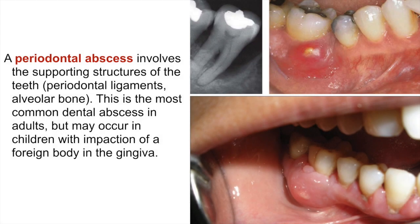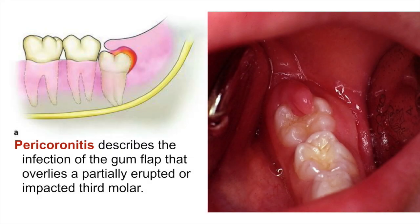A periodontal abscess involves the tissue-supporting structures of the teeth — the periodontal ligaments and alveolar bone. This is the most common dental abscess in adults but may occur in children with impaction of a foreign body in the gingiva. Perichoronitis describes the infection of the gum flap that overlies a partially erupted or impacted third molar.